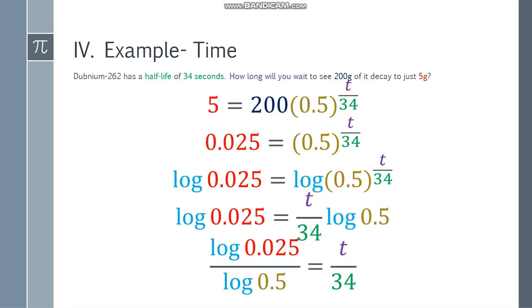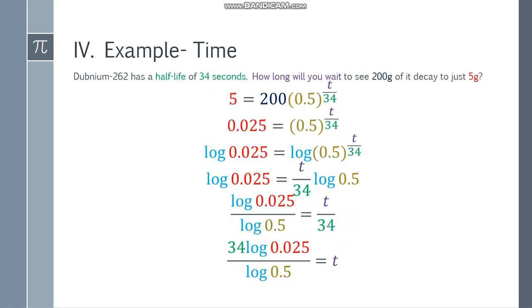So log of 0.025 is equal to T over 34 log of 0.5. Ngayon, algebra to solve for that one. Yung T over 34, divide both sides by log of 0.5 lang. Is equal to T over 34. To find the value of T, cross multiply mo, 34. Ngayon multiply mo lang, 34 log of 0.025 over log of 0.5 is equal to T.